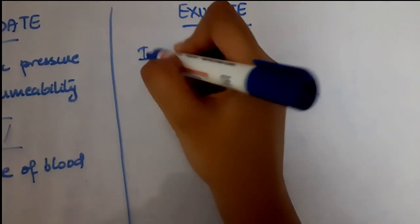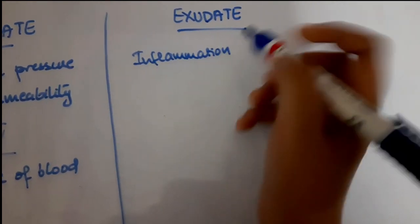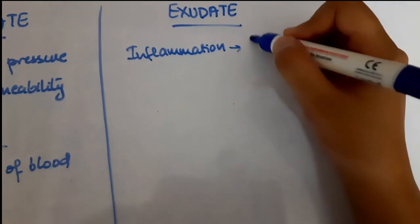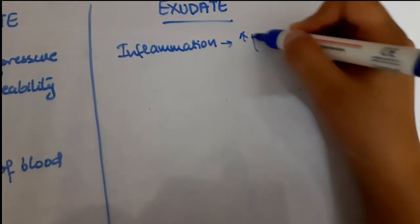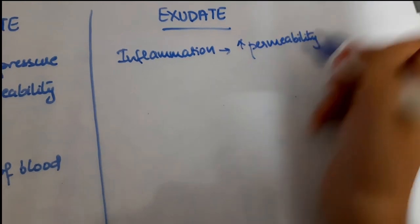Whereas exudates are formed due to inflammation. This inflammation causes damage to the blood vessels which increases permeability of the blood vessels and causes the leakage of inflammatory or purulent type of fluid.